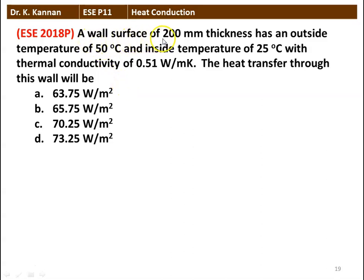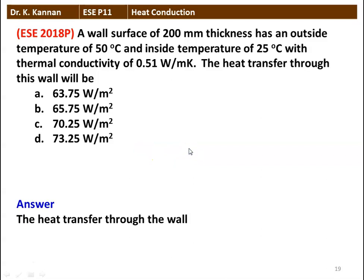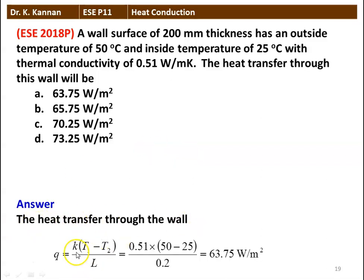Next question: a wall surface of 200 millimeter thickness has an outside temperature of 50 degree Celsius and inside temperature of 25 degree Celsius, with thermal conductivity of 0.51 watts per meter Kelvin. The heat transfer through this wall will be: (A) 63.75 watts per meter square, (B) 65.75, (C) 70.25, (D) 73.25 watts per meter square. The answer: Q = K·(T1 - T2) / L = 0.51 × (50 - 25) / 0.2 = 63.75 watts per meter square. The answer is option A, 63.75 watts per meter square.